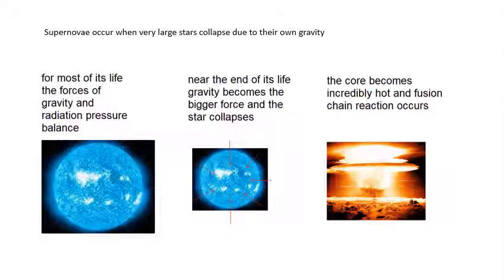So what's this supernova? Supernovae occur when a very large star collapses due to its own gravity. Normally during its lifetime, there's forces pushing outwards due to fusion—the nuclear reactions happening in the star—and you've got gravity pulling inwards. When a star is in the main sequence, these two forces are balanced for most of its life. The force of gravity and radiation pressure are balanced. However, near the end of its life, the gravity becomes the bigger force when fusion starts fizzling out.